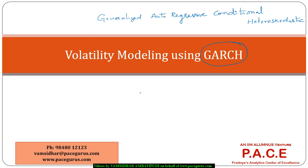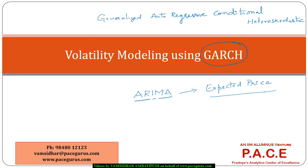Before we get into it, I hope you are quite comfortable with the usage of the ARIMA group of models — the Auto-Regressive Integrated Moving Average model — where our objective was to typically arrive at an expected value. We were projecting the expected price conditionally given the past, and also building a 95% or some kind of confidence interval around that expected value.